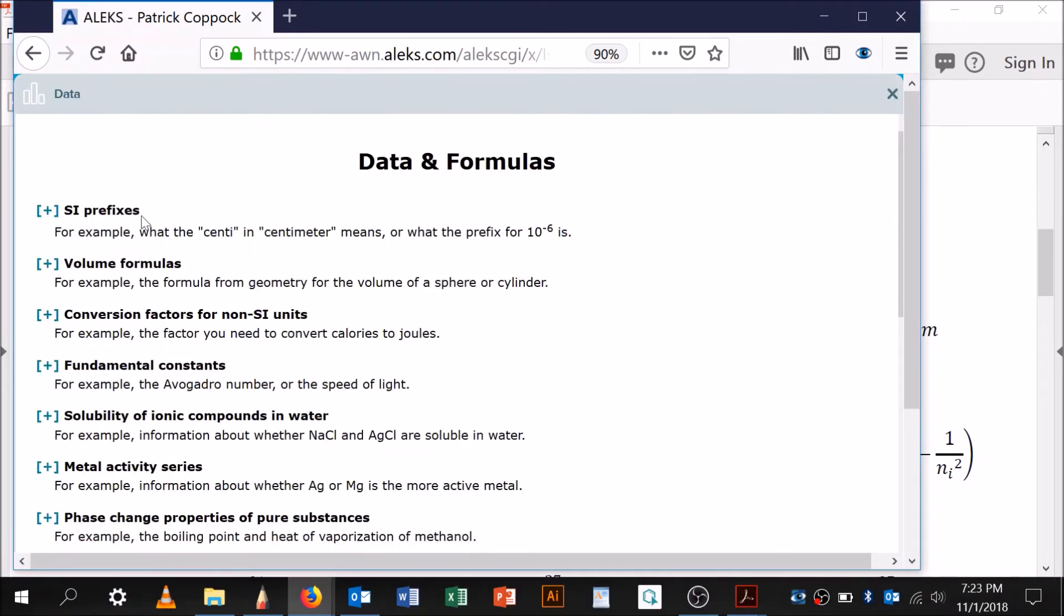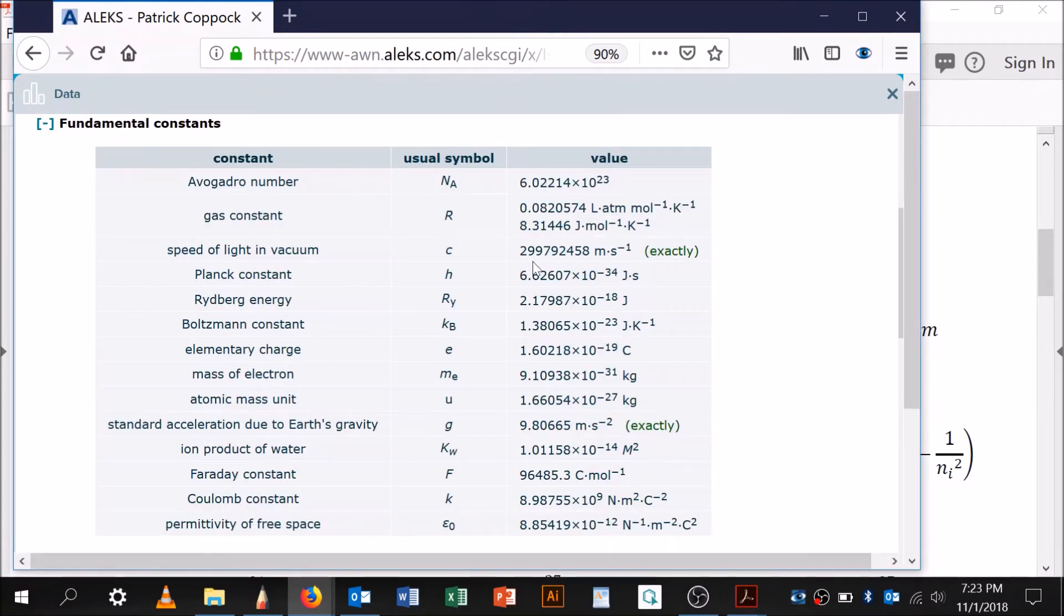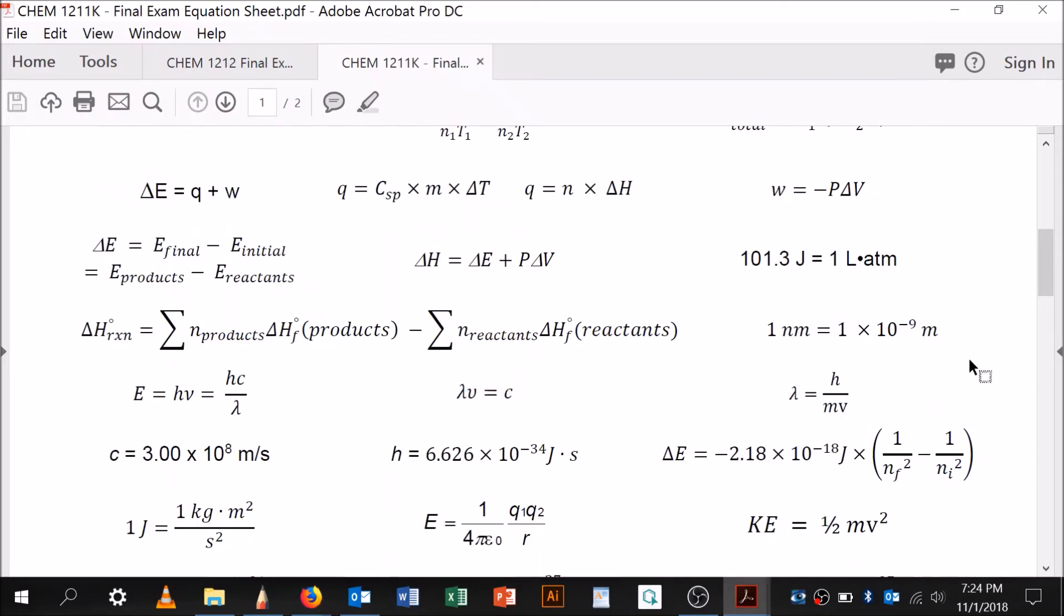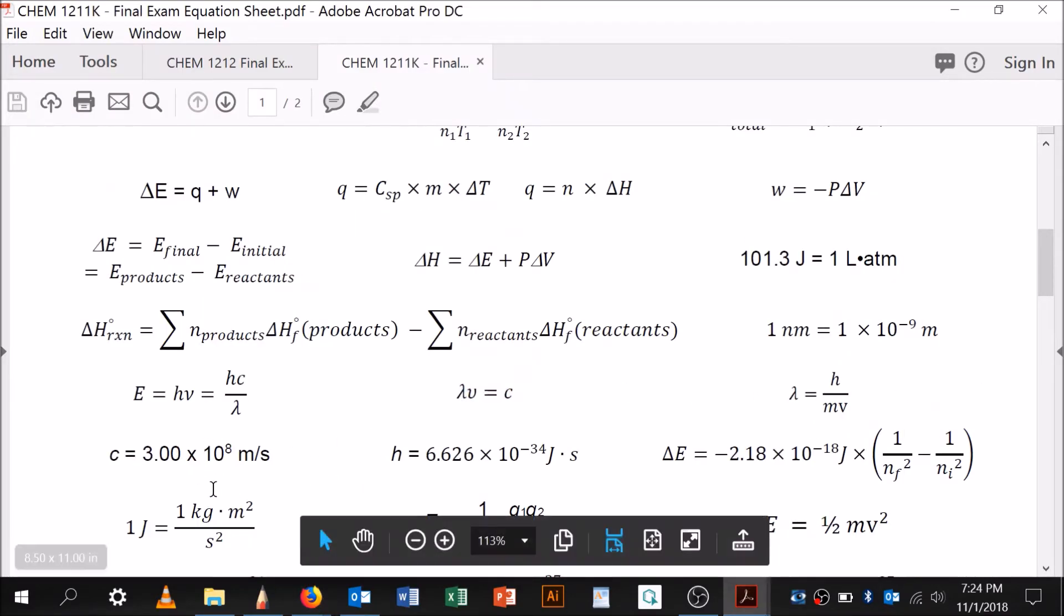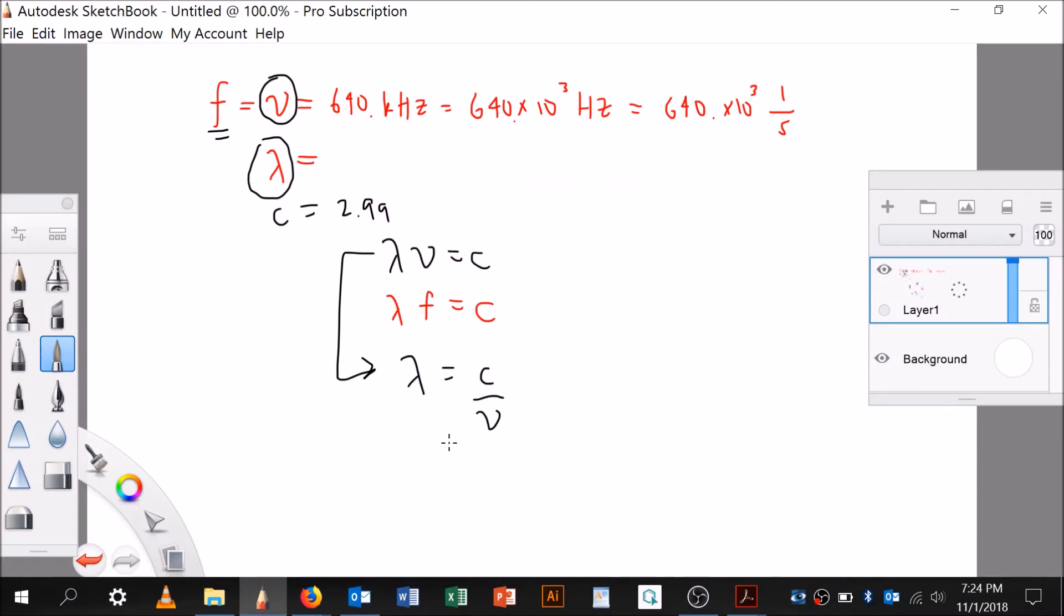Let's see if it's in data. I think it's in the calculator and the data, but let's look here. First of all, fundamental constants, speed of light, yep, there it is, 2.9979, right? Which rounds to 3.00. 2.9979, I'm going to put those in there. C is equal to 2.9979 times 10 to the 8th meters per second.